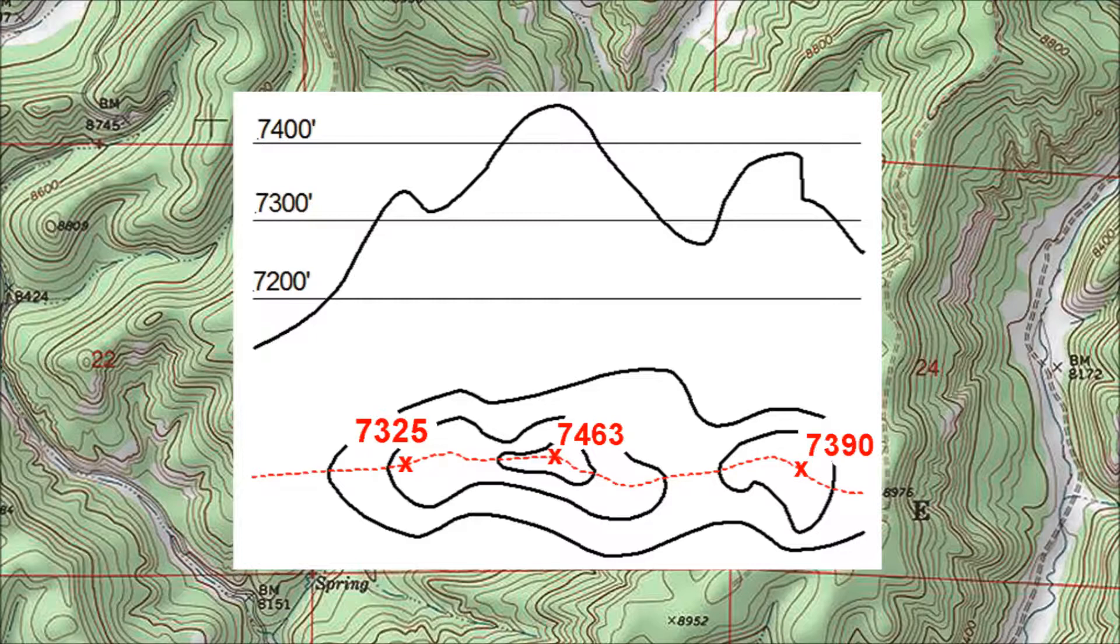One way to do that is to put little x's on the map, one for each peak, and mark the elevation next to each.